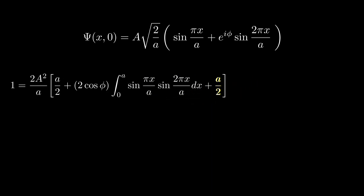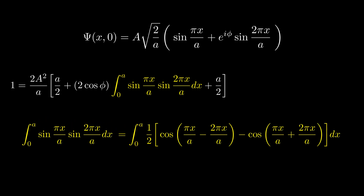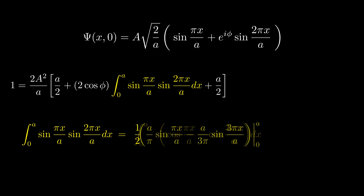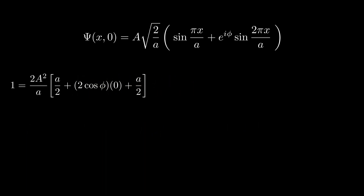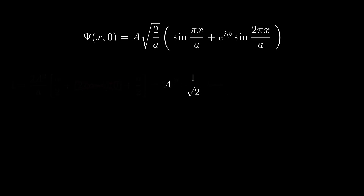Now replacing this value in our equation, we've successfully computed the first and third integrals. Next, we move on to the middle term. To simplify this integral, we use a standard identity for the product of two sine functions, rewriting it in terms of cosines. When we integrate these cosine terms from 0 to a, both terms vanish, meaning the middle term contributes nothing. We're left with just the sum of the first and last terms, each equal to a/2. Solving for capital A, we find that the normalization constant is simply 1 over the square root of 2.